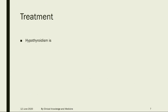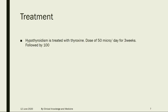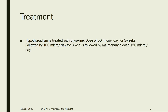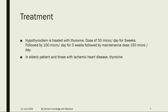Treatment: Hypothyroidism is treated with thyroxine. The dose is 50 micrograms per day for 3 weeks, followed by 100 micrograms per day for 3 weeks, followed by a maintenance dose of 150 micrograms per day. In elderly patients and those with ischemic heart disease, thyroxine is started at a lower dose of 25 micrograms.